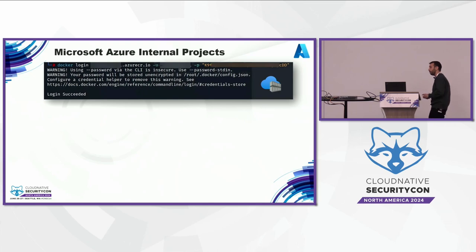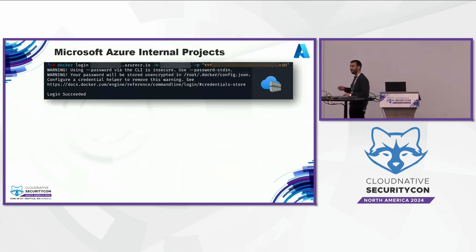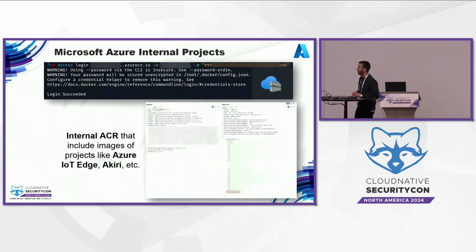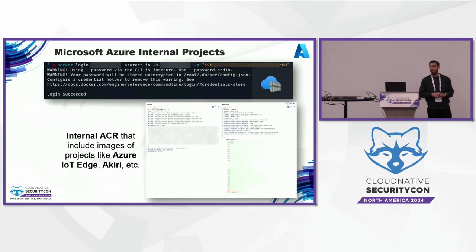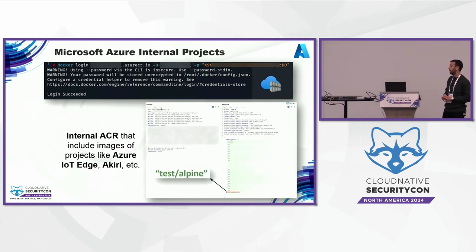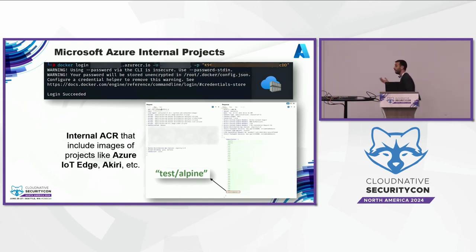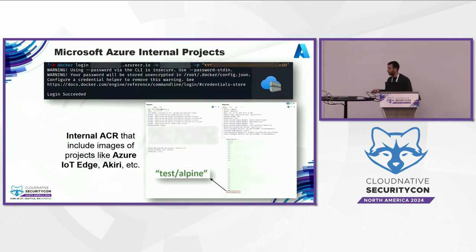In our research, we found on a public GitHub repository of a Microsoft employee a token to an internal Azure registry used by Azure. This container registry contained internal projects used by Microsoft, such as Azure IoT Edge. In our proof of concept, we proved that this token had elevated privileges — we could actually push a malicious image to this container registry, which could be used to perform supply chain attacks against Azure and its users. We reported this to Microsoft, which acknowledged and rotated the token.